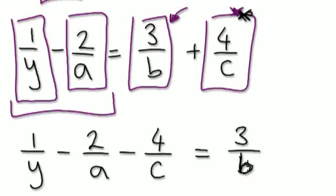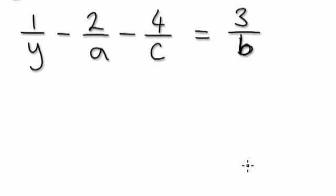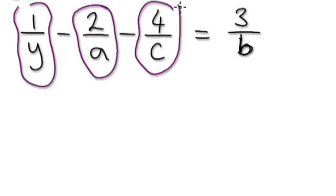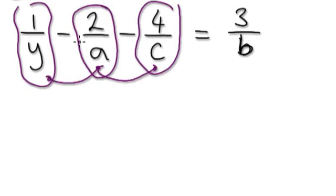We are trying to make B the subject. You can see you've got to take the reciprocal to get B on top, and then you can cancel the 3. But remember, in order to take the reciprocal, you can only do it when you have one fraction. Here you've got this fraction, this fraction, and this fraction — you can only use the reciprocal move when you have one fraction.